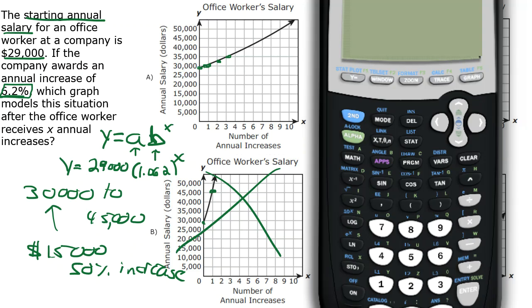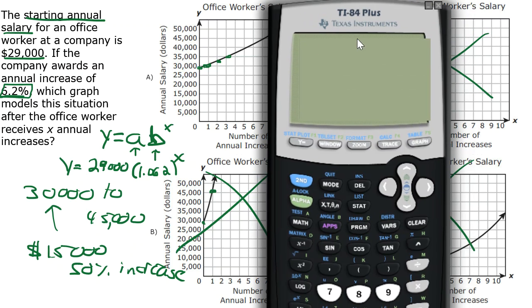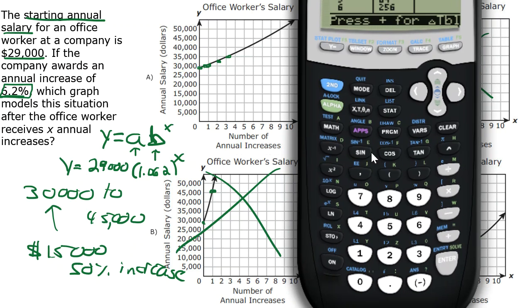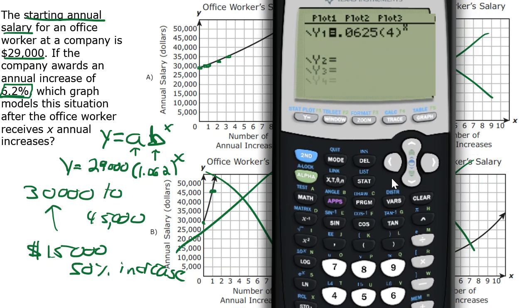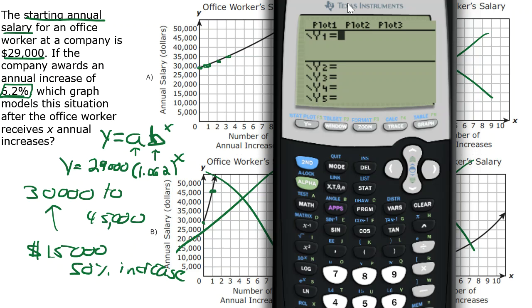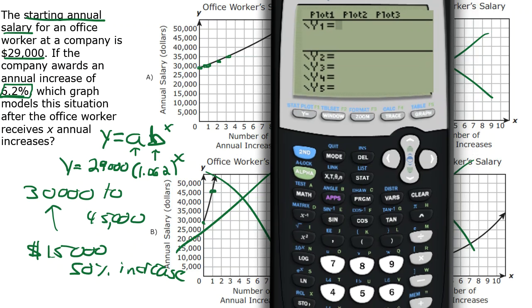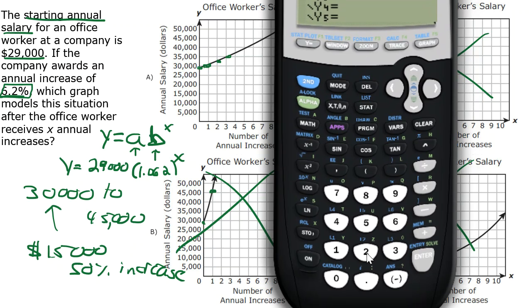If we grab our graphing calculator and turn it on, we go to the Y equals screen. Then we can enter 29,000 times 1.062.